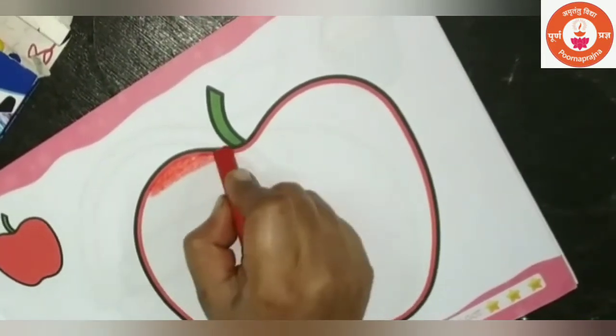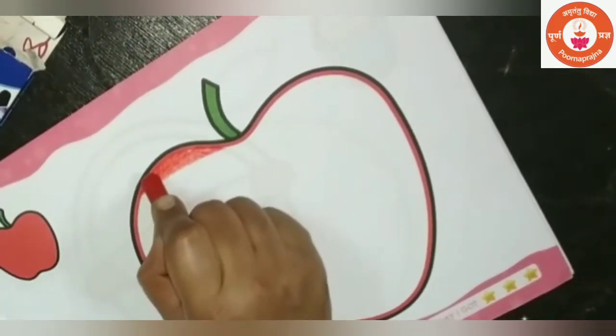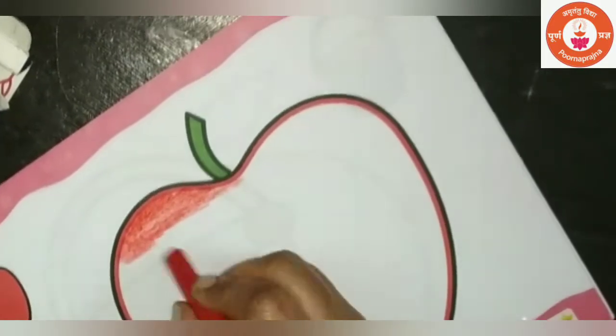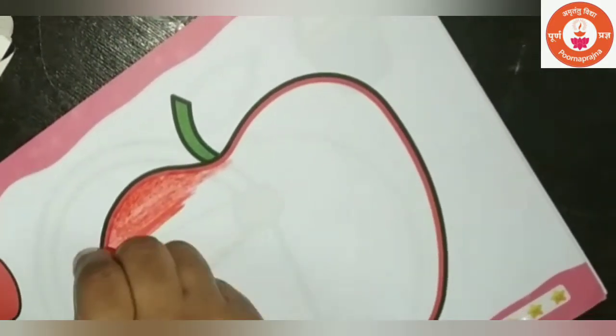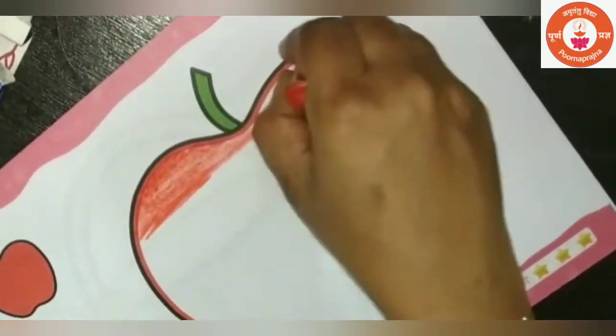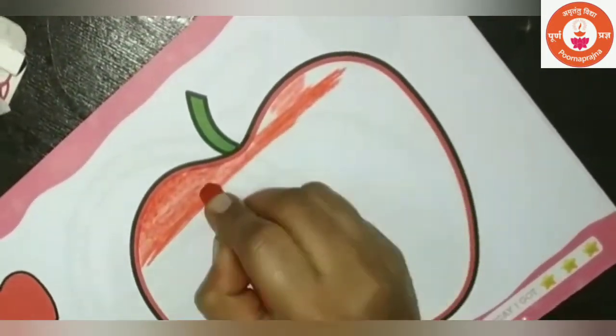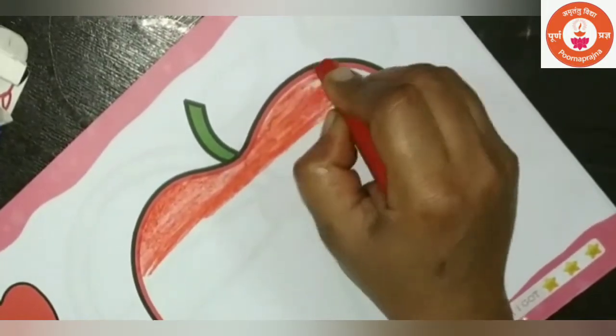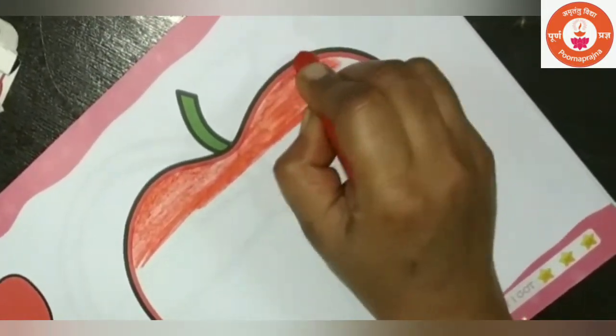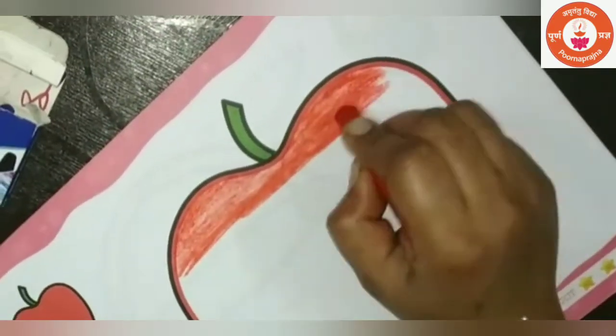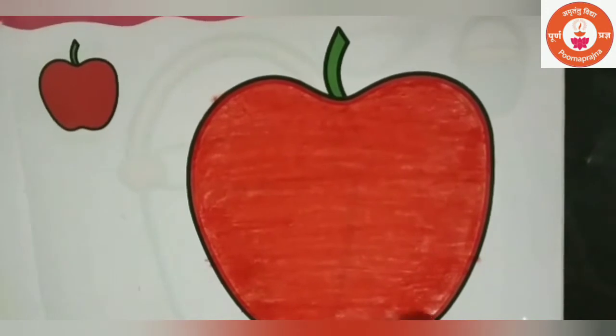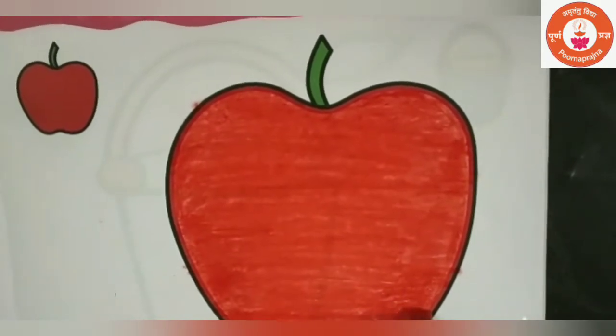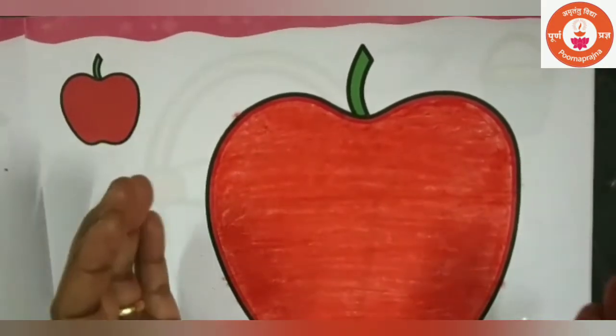Color slowly with the sleeping line. Don't cross the line. Color slowly. Color completely. Let them color the apple.